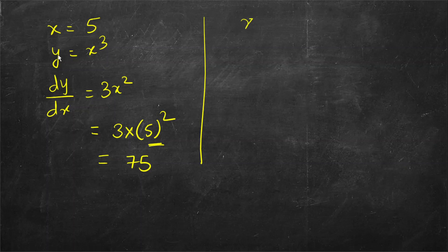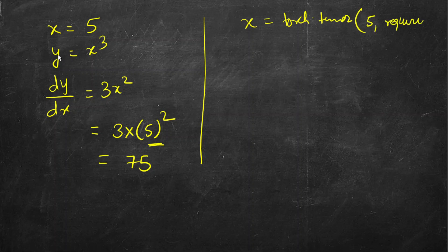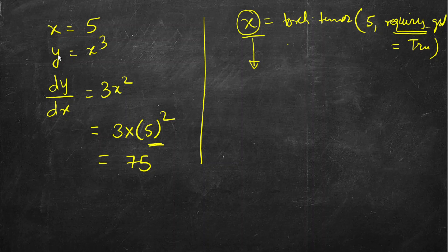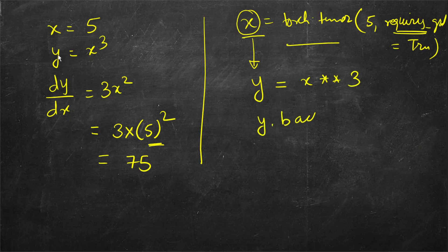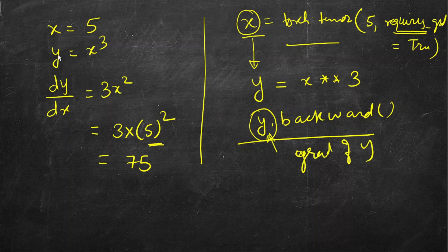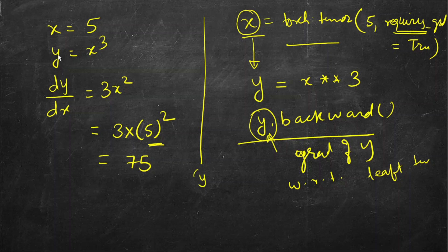In PyTorch, we define x as torch.tensor(5) and set requires_grad=True. If we don't set it, PyTorch will not keep track of the derivative. Then we define y = x**3 and call y.backward(). This important function computes the gradient of the current tensor y with respect to leaf tensors. In this case x is the leaf — y depends on x, and x does not depend on anything else.